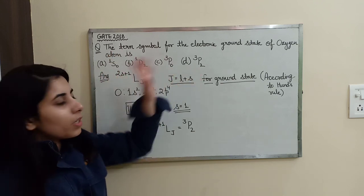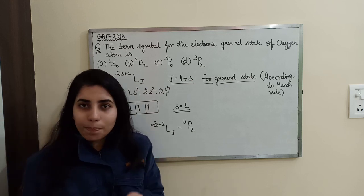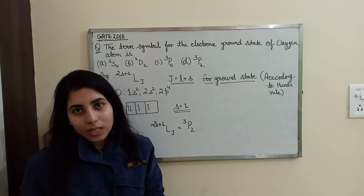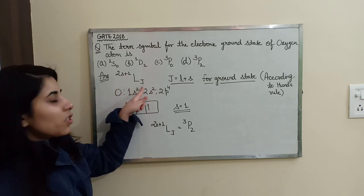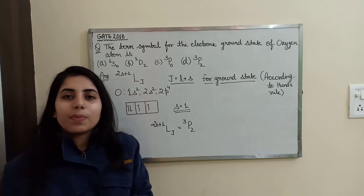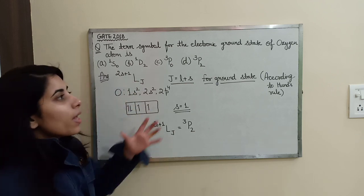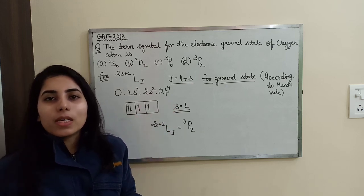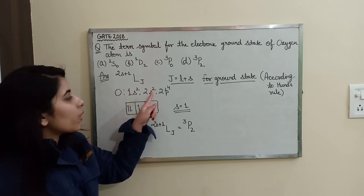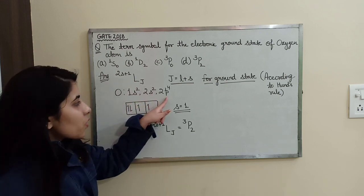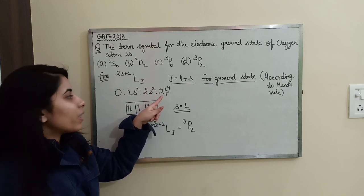First of all, the general form for the spectroscopic term symbol is 2S+1 L_J. The very first step is that we need to write the electronic configuration for the given atom. For oxygen, the electronic configuration will be 1s², 2s², and 2p⁴. In the last orbital — the last shell — we are having the p orbital in which 4 electrons are present.